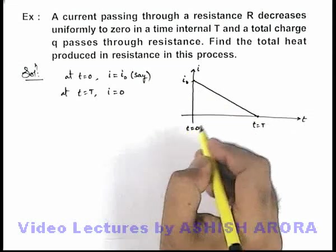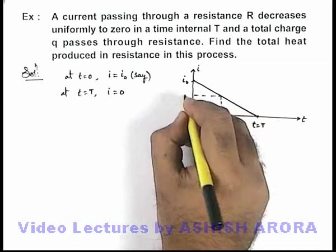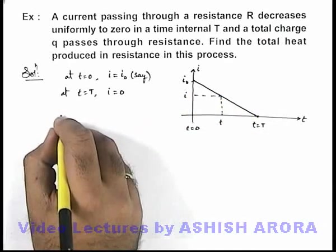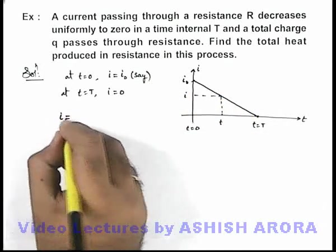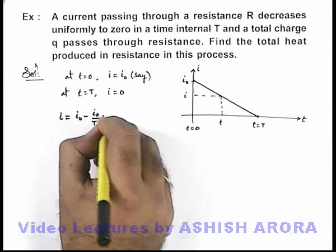From this graph, we can easily find out the function of current at a general time t. It can be written as the value of current at a general time t: i_0 minus (i_0/T) times t. This is a straight line function we can write using mx plus c relation.